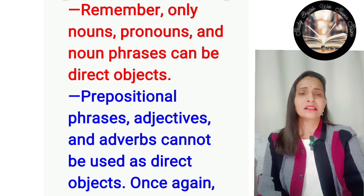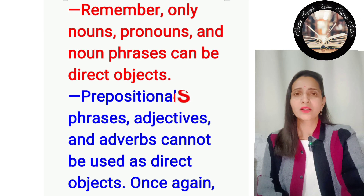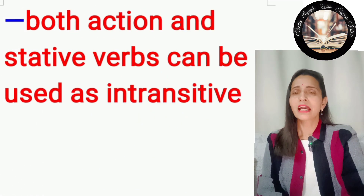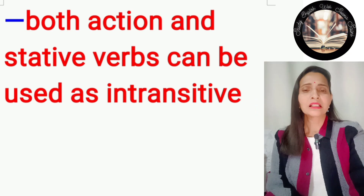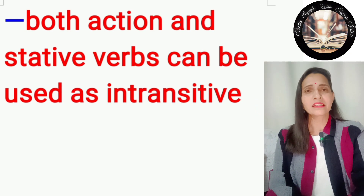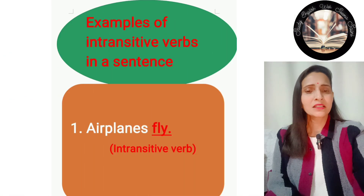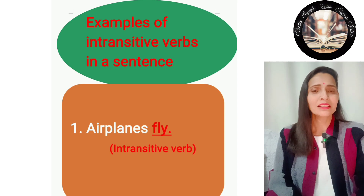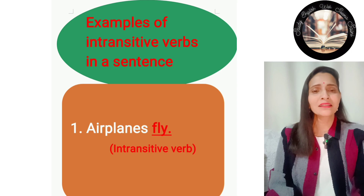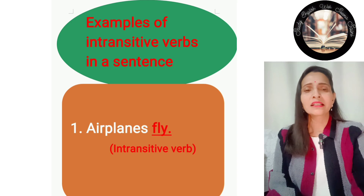Prepositional phrases, adjectives, and adverbs cannot be used as direct objects. Both action and stative verbs can be used as intransitive verbs. Example: 'Aeroplane fly.' Here, 'fly' is the verb and there is no direct object, so this is an intransitive verb.